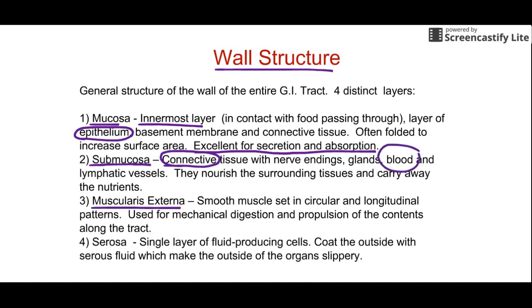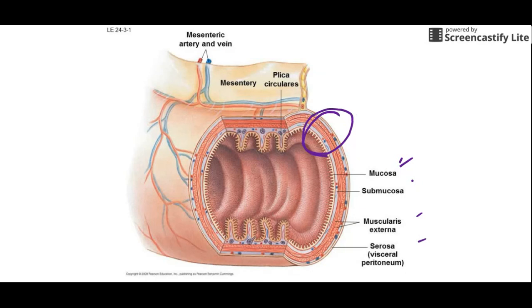The third layer is the muscularis — smooth, involuntary muscle — that squeezes, crushes, mixes, and pushes food through the digestive tract. The outermost layer is the serosa, which makes the outside slippery so your digestive organs can slide around as you move. Looking at the diagram: mucosa on the inside with visible folds for absorption, the submucosa in blue where blood vessels absorb nutrients, then the muscle layer, and the serosa on the outside.